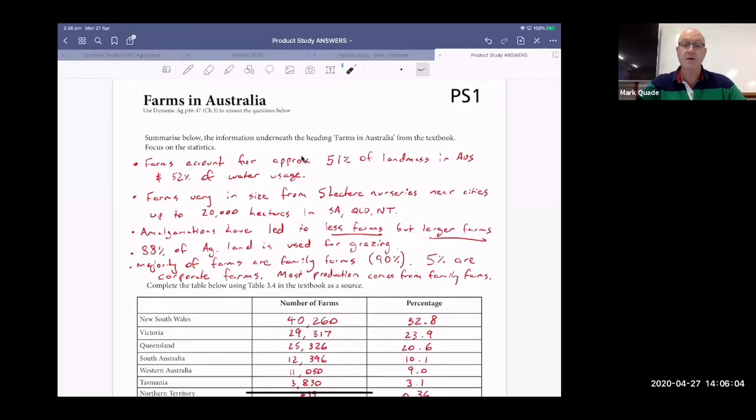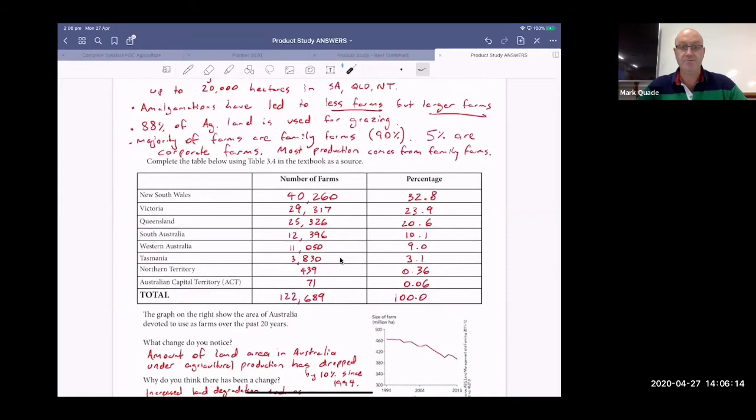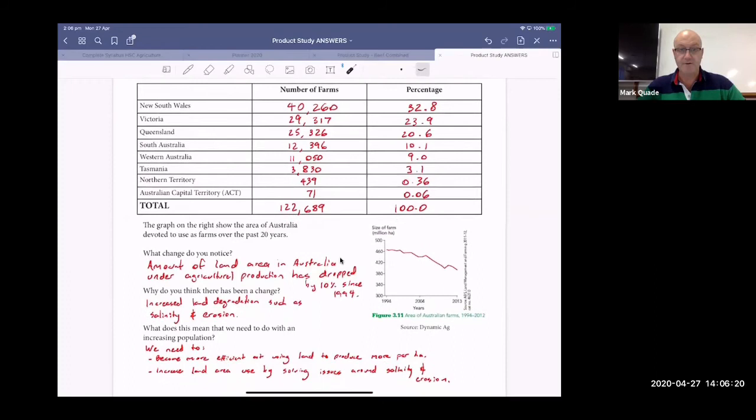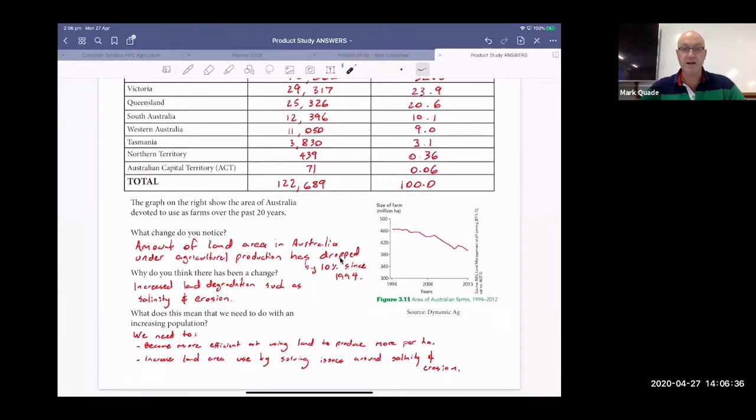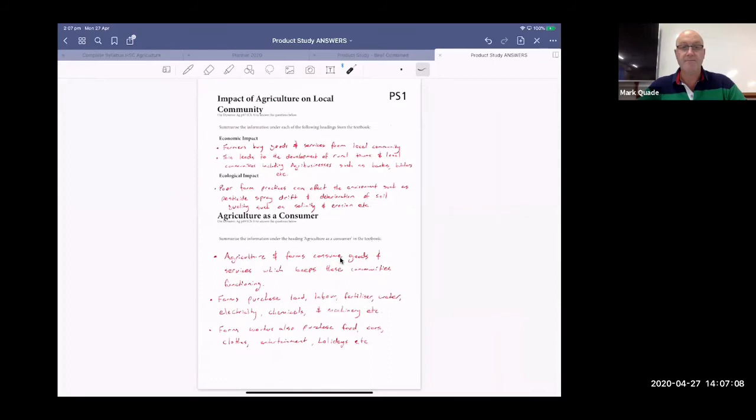This is straight out of your textbook. The graph on the right shows the area of Australia devoted to farms over the past 20 years. We have had a slight decline in the size of our farms. Land degradation has caused this decline. When land is degraded through salinity, it can no longer go into production. So we do have a degradation problem. What does this mean that we need to do with an increasing population? We need to become more efficient in using land to produce more per hectare, increase land area by solving our degradation issues such as salinity and soil erosion.